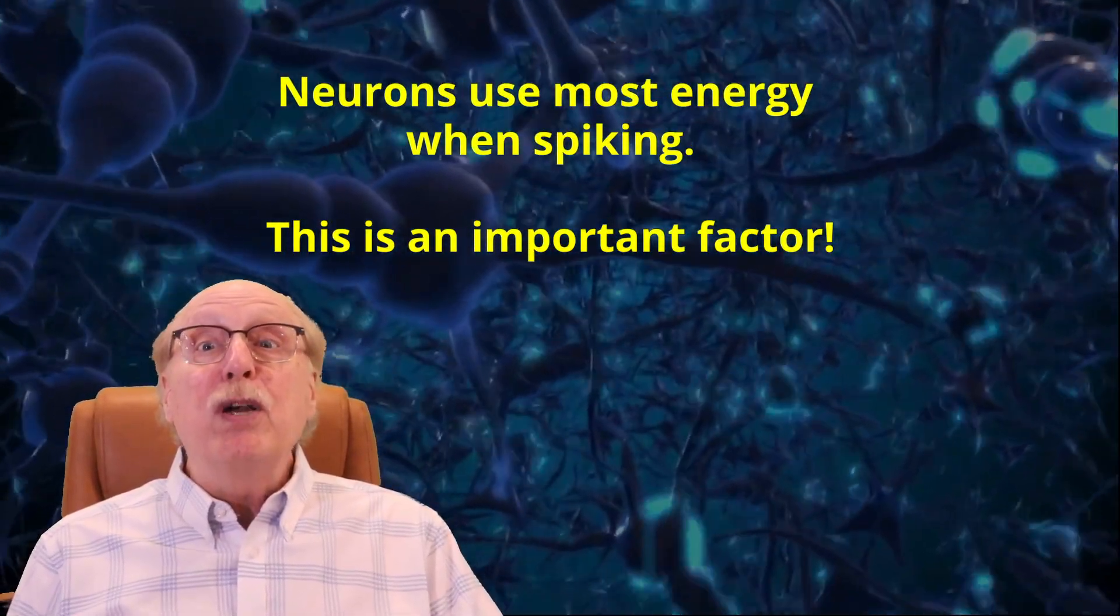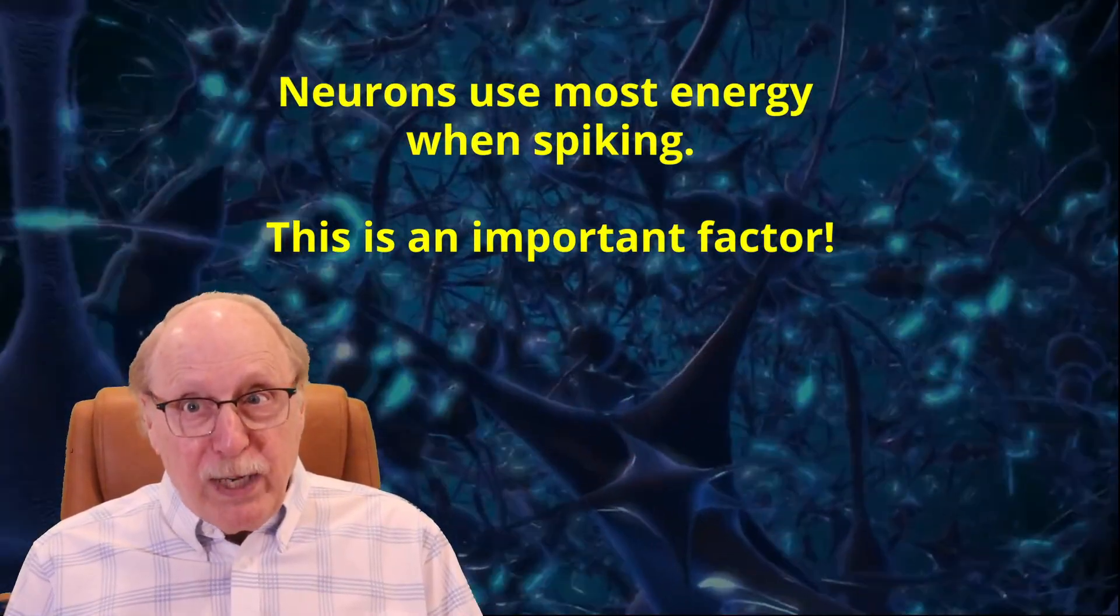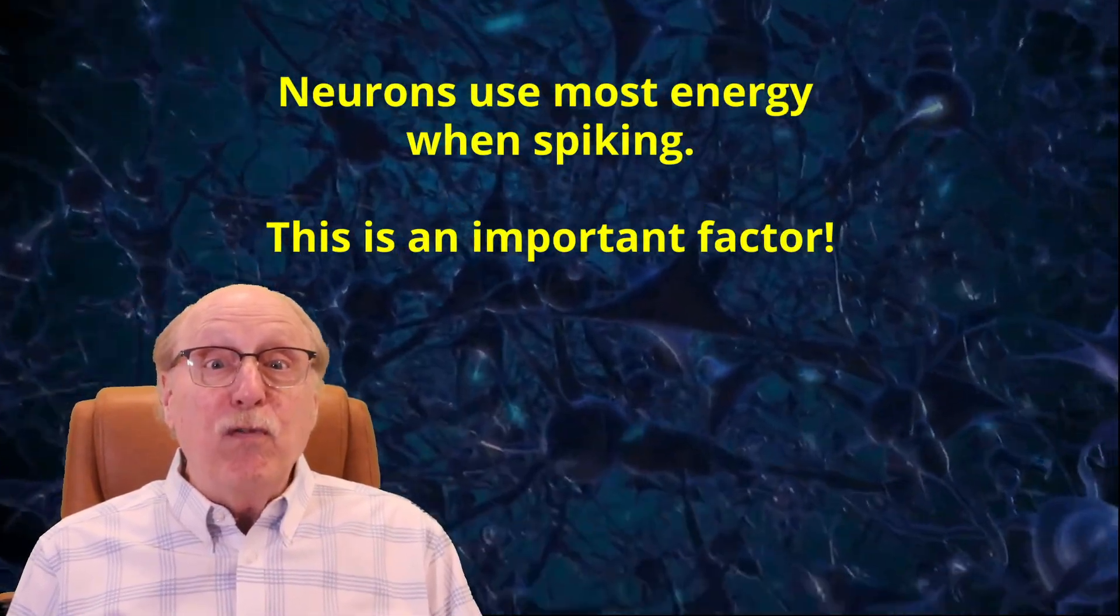In a seizure where large numbers of neurons are firing at a high rate, they can overwhelm your brain's circulatory system so that neurons run out of oxygen and or overheat.